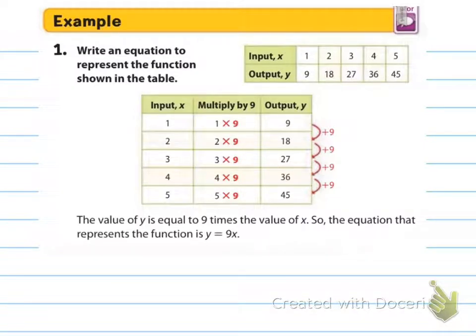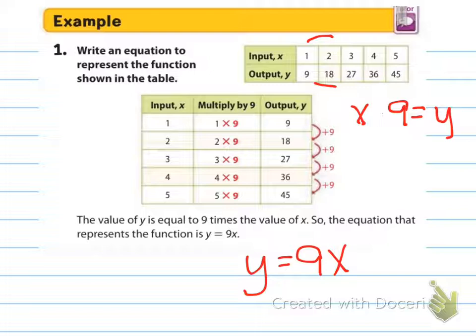Number one says write an equation to represent the function shown in the table. The input is 1, 2, 3, 4, 5, and the output is 9, 18, 27, 36, 45. You might see that as this is going up by one, this is going up by nine. So that's a very good indicator that we're multiplying times nine. So our input times nine equals our output. X times nine equals Y. And they always like to put our Y first, so we write it as Y equals 9X.